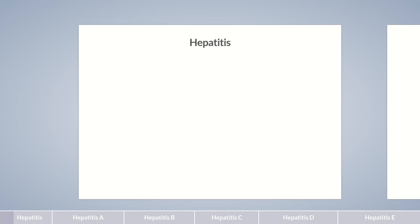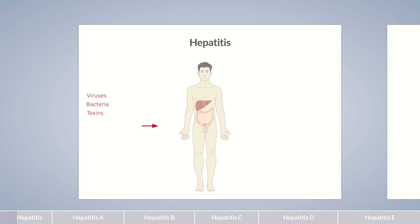There are different potential causes of hepatitis. One of the most common are viruses, as well as bacteria, toxins, medicinal drugs, excessive alcohol consumption, metabolic disorders, non-alcoholic steatohepatitis, or autoimmune diseases.